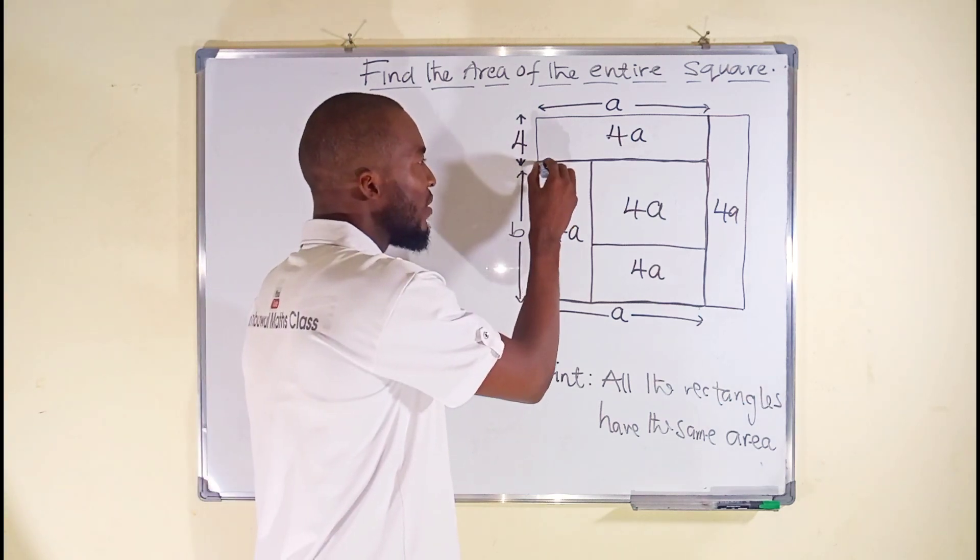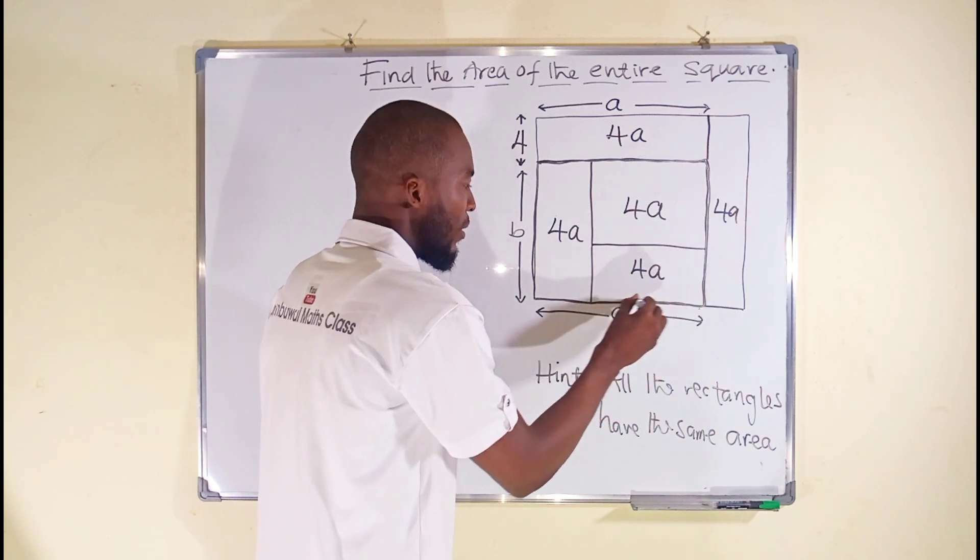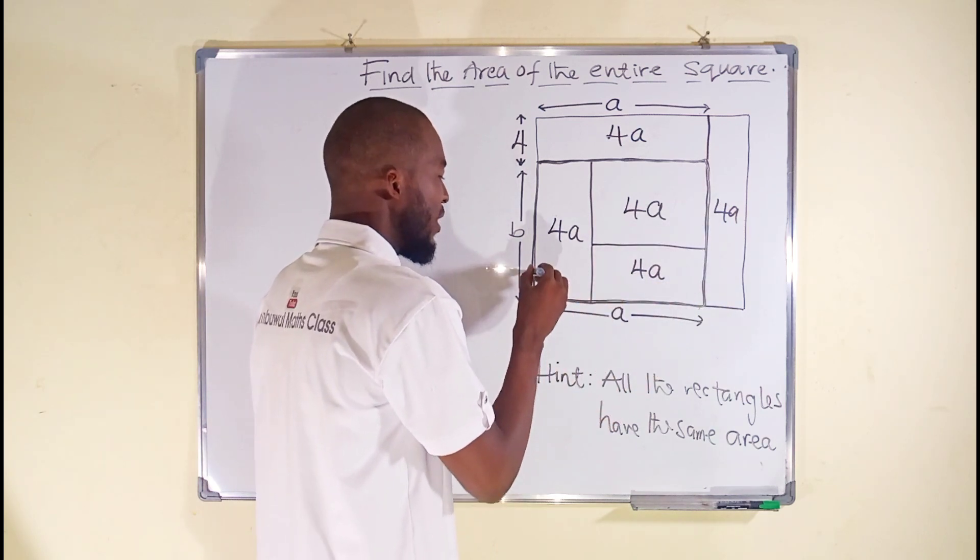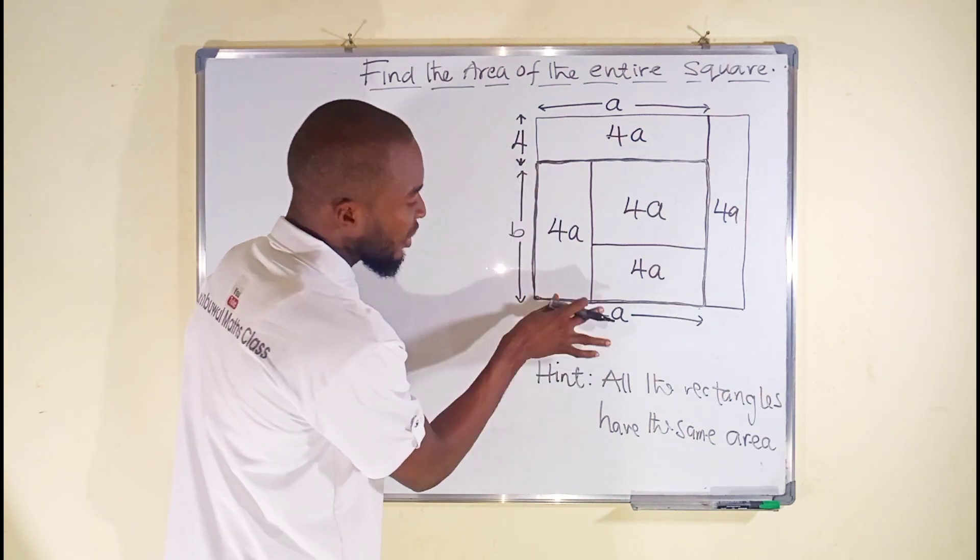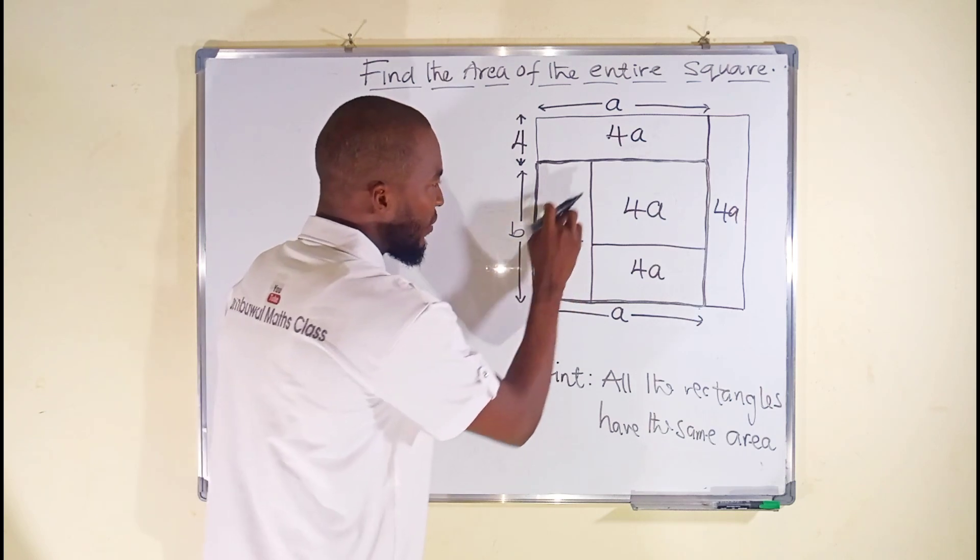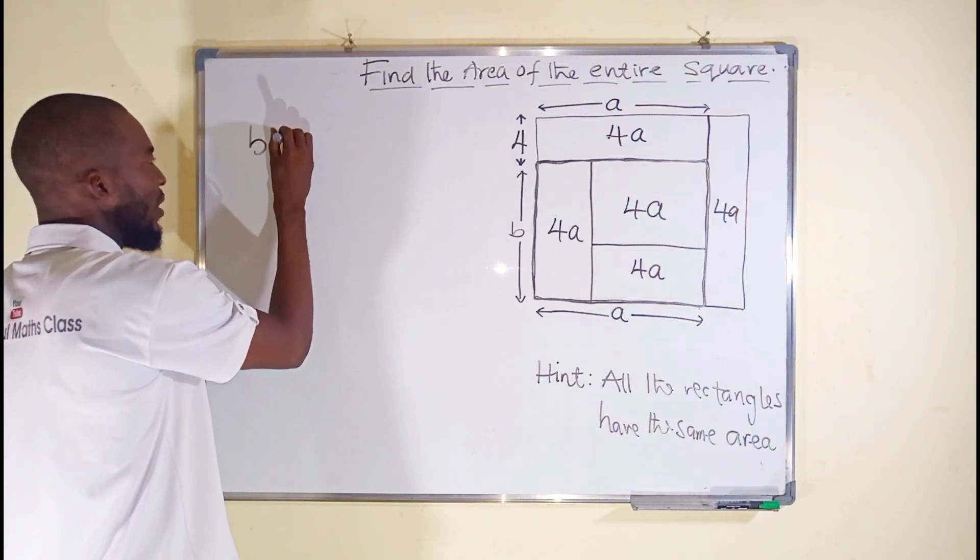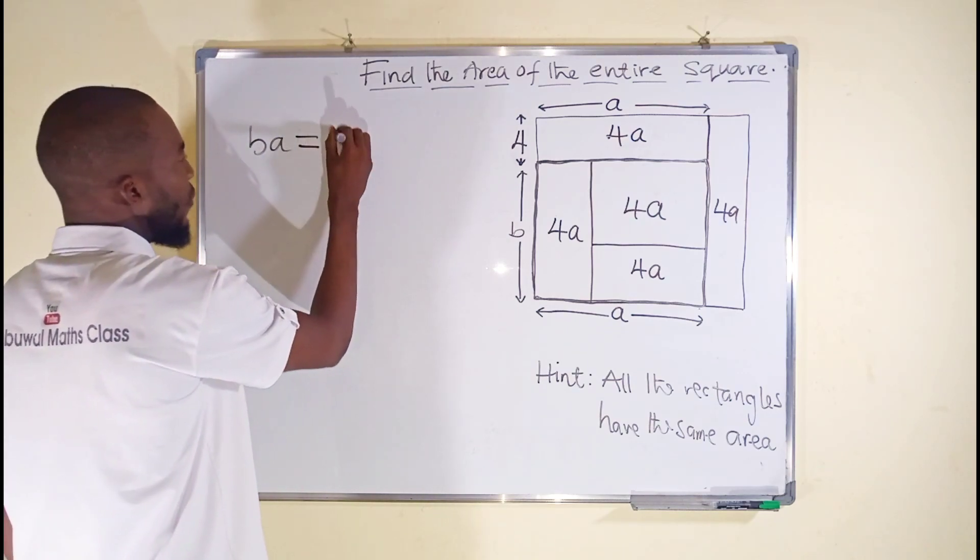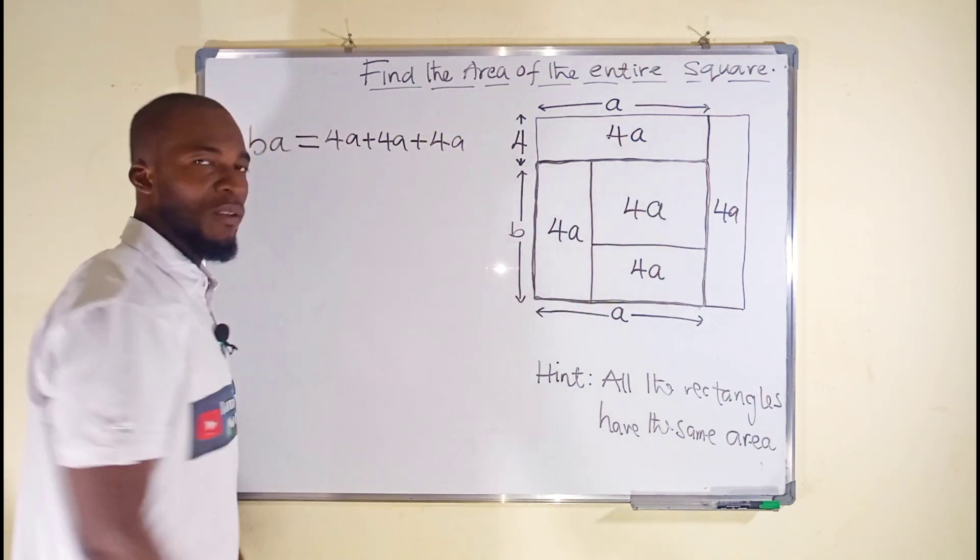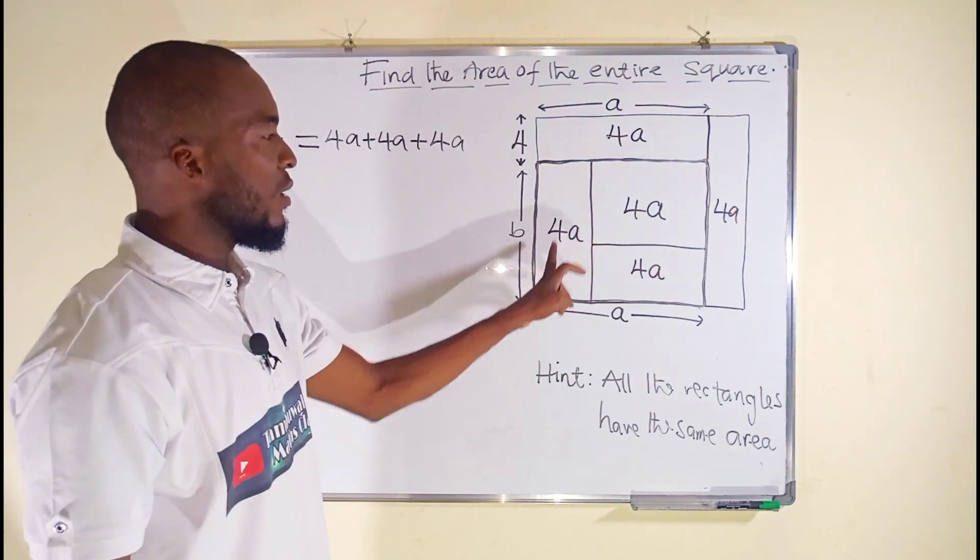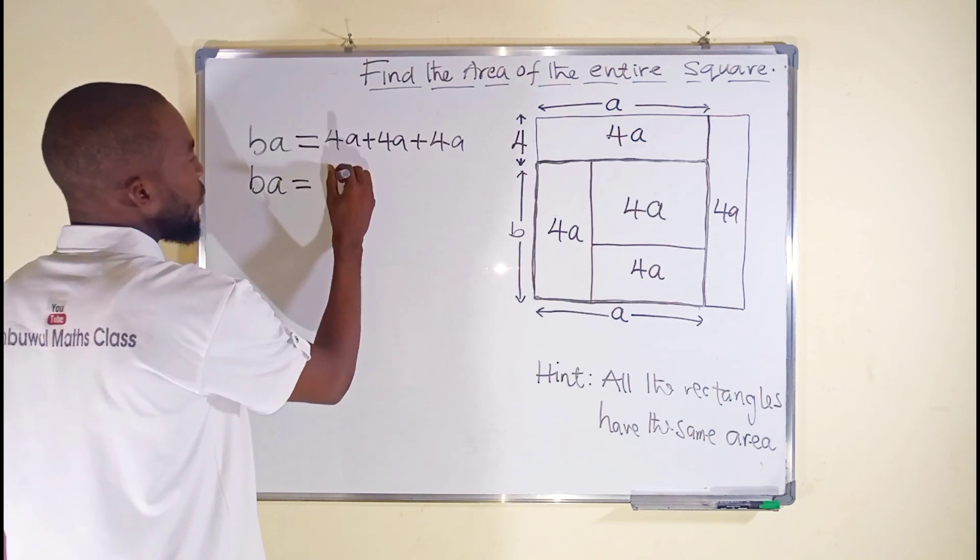Now we can consider this quadrilateral. Look at it here, because the lengths and the breadth are present. You can see we have a and b. If multiplied together we are going to obtain the area of these three rectangles. So b times a, which is the same thing as ba, will be equal to 4a plus 4a plus 4a, the total areas of three 4as. ba will be equal to 12a.